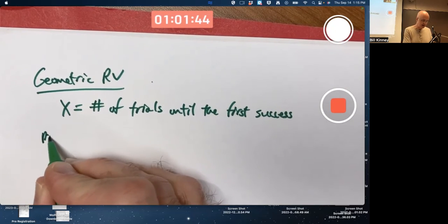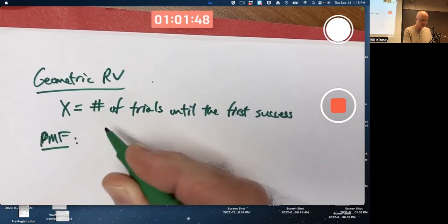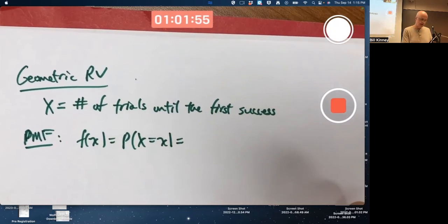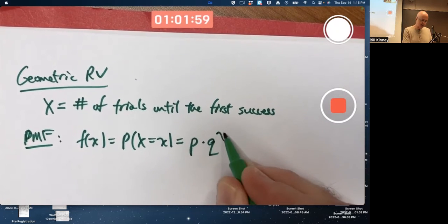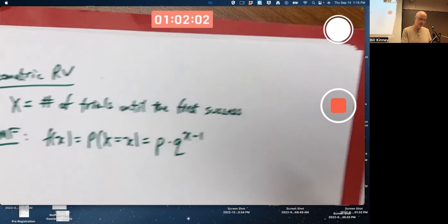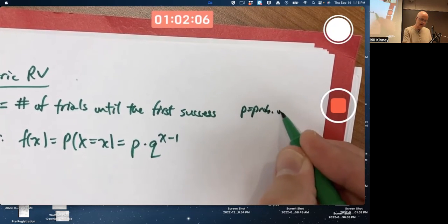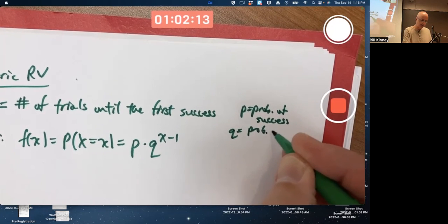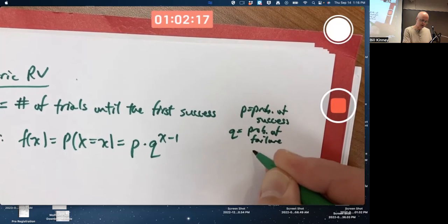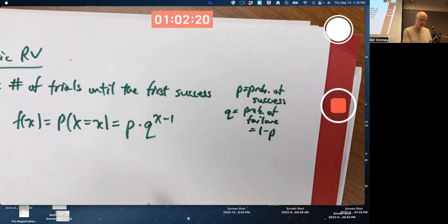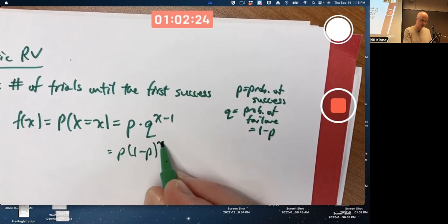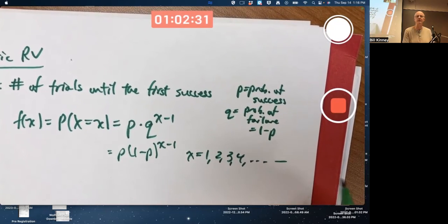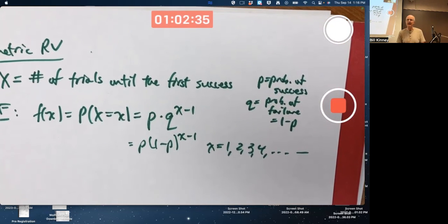The PMF - again, I'm going to call it a PMF, the book will call it a PDF - we saw last time is P times Q to the X minus one. P is the probability of success, and those are opposite events and therefore Q equals one minus P. So you can also think of this as P times one minus P to the X minus one. This is the formula you use for X equal to one or two or three or four, et cetera, forever and ever. There are infinitely many values that X can take on with positive probability.